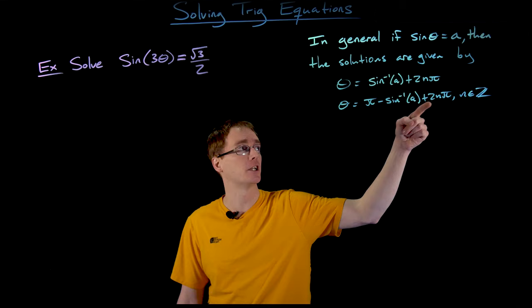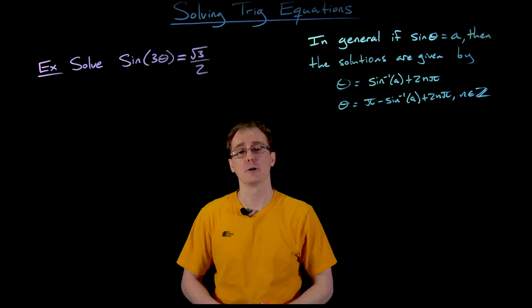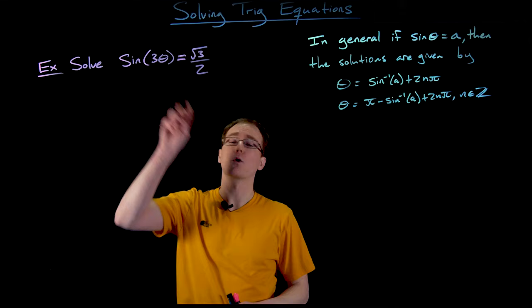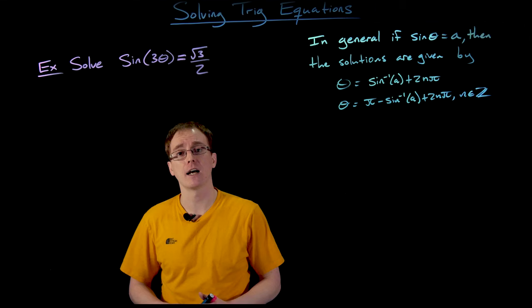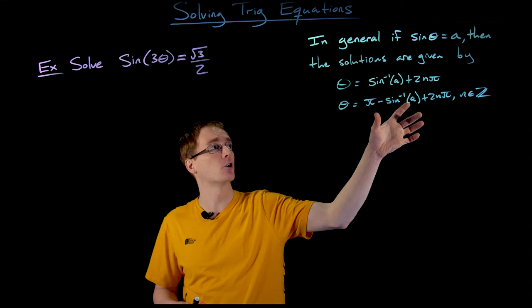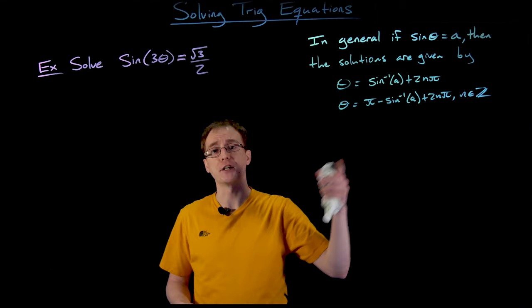For all of this, n represents an integer — a whole number, positive or negative. Our general method for solving a basic sine equation won't work directly for this equation because we have 3 theta instead of just theta inside our sine function. But we can make a small adaptation to this procedure by making a simple substitution.